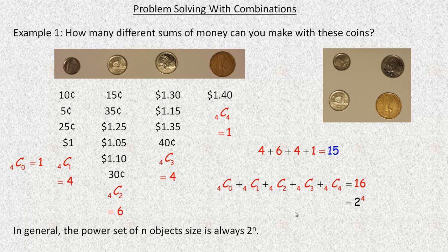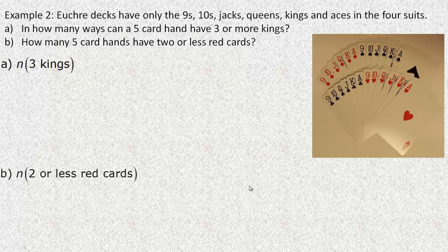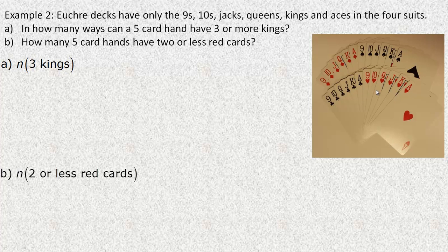In some cases you don't use the empty set, like in this example, but it is part of the power set. For one more example: a Euchre deck. Euchre decks have only the nines, tens, jacks, queens, kings, and aces in all four suits — diamonds, spades, clubs, and hearts. That's the whole Euchre deck.